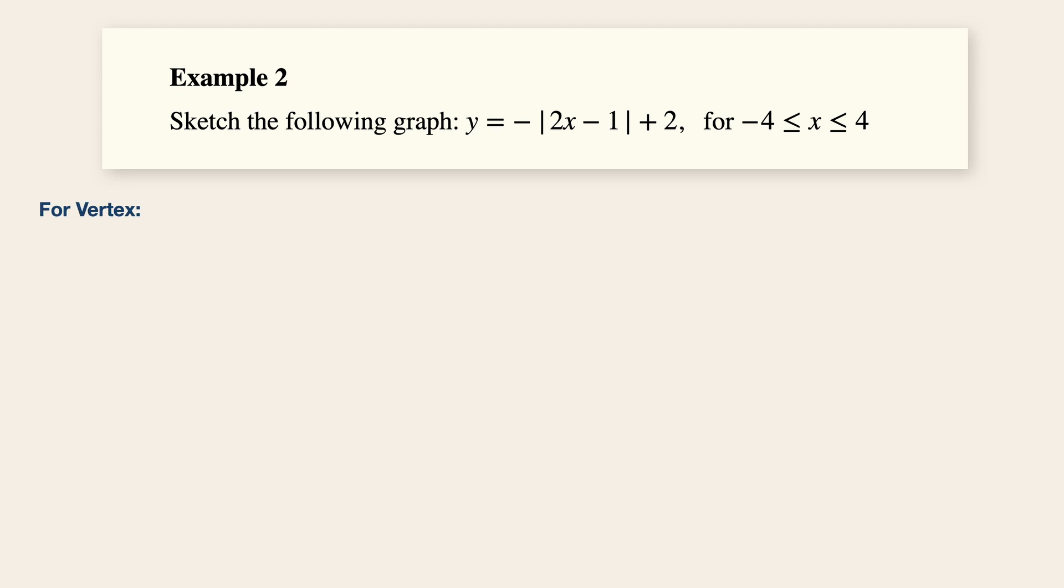Now remember, for the vertex, take the statements within, only within the modulus signs and equate it to zero. For this case, the value of x is equal to half. And when x is equals to half, be very careful over here, y is equals to minus modulus zero plus two, which is equals to two. And the vertex is therefore half and two.